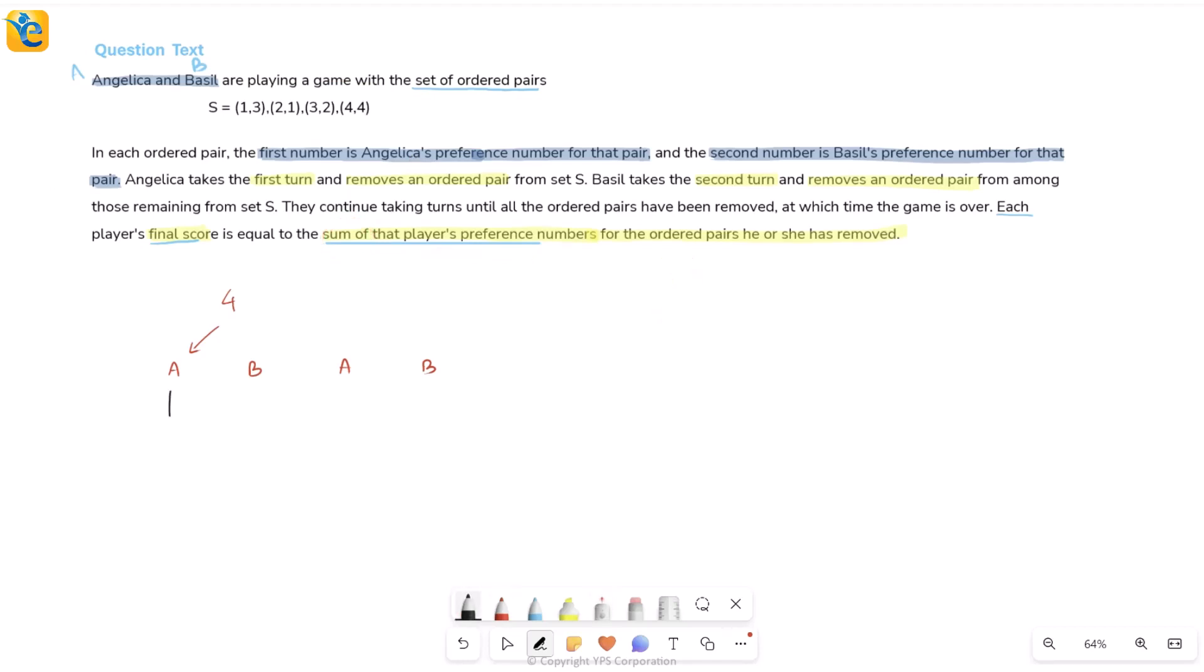So if I take a random example, suppose A removed 1,3 and 2,1. I'm just randomly writing the first two. Then what are the preference numbers for A? I know the first number is A's preference number. So that's going to be 1 from here and 2 from here. When you take the sum, 3 becomes the final score for A. This is when A picked up 1,3 in the first turn and 2,1 in the second turn this way. Same thing you'll do for B. So this is just how the score is determined.